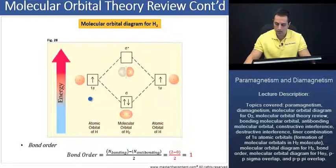If we take a look here, we see that we have the atomic orbitals for hydrogen. We have one here, and we have one here, and we have the lower energy sigma orbital, and we have the higher energy sigma star or antibonding molecular orbital as such.